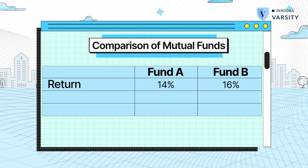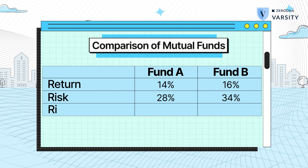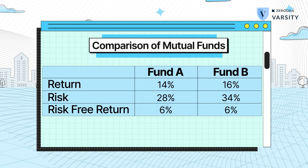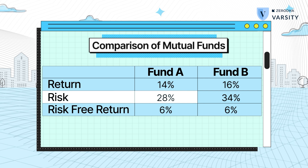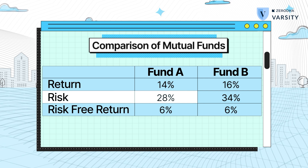Now let's add some more information. Along with the returns of the fund, I've also included the risk or the standard deviation of the fund and also a certain risk-free rate. Given all this information, which of the two funds do you think is better? If you were to evaluate the fund based on risk, then Fund A is better as it has a lower standard deviation. If you were to evaluate based on returns, then Fund B is better as it has delivered higher returns. But in reality, you'll have to choose a fund based on both risk and return — you cannot isolate them. And this is where Sharpe Ratio helps us.